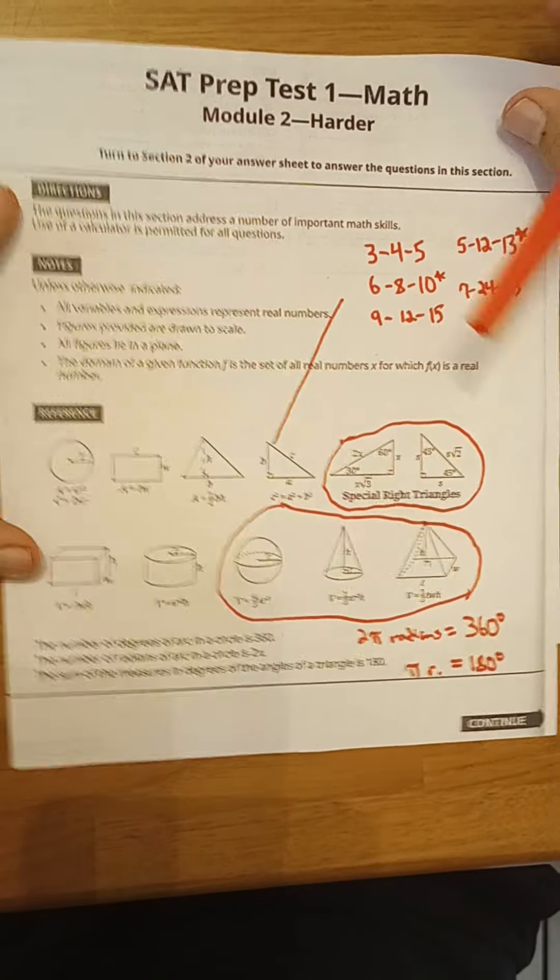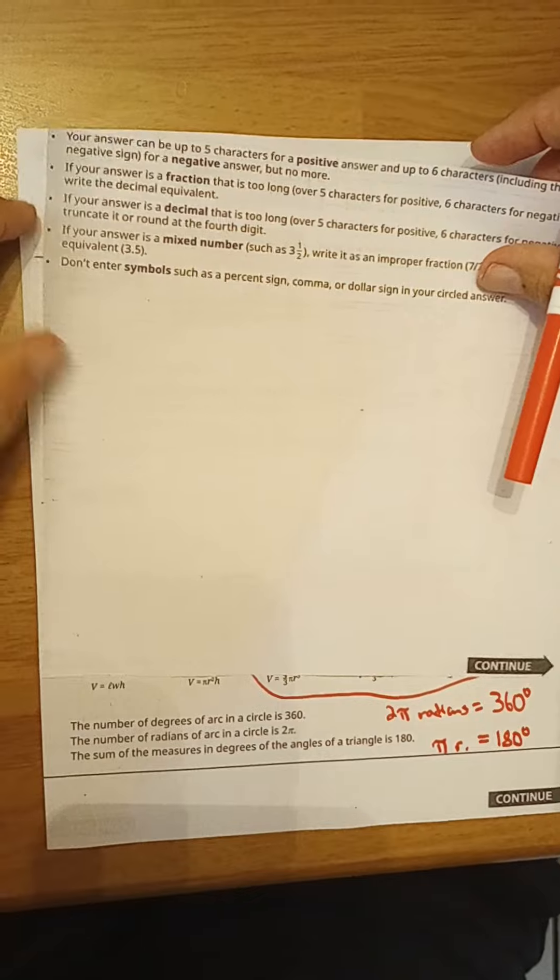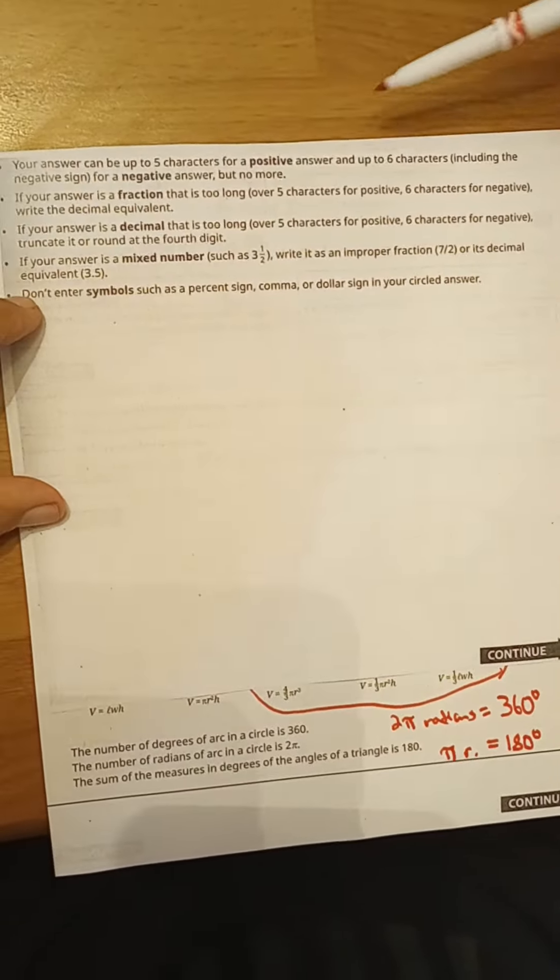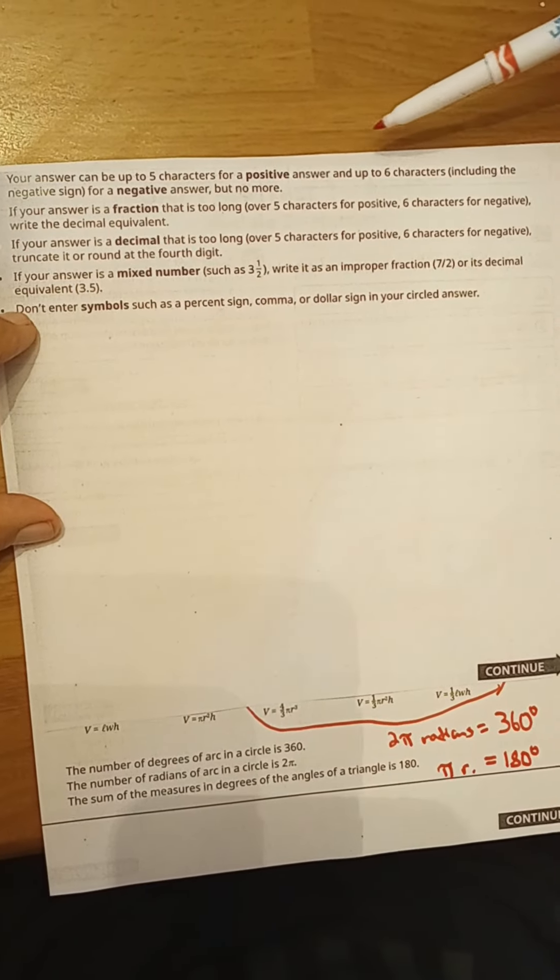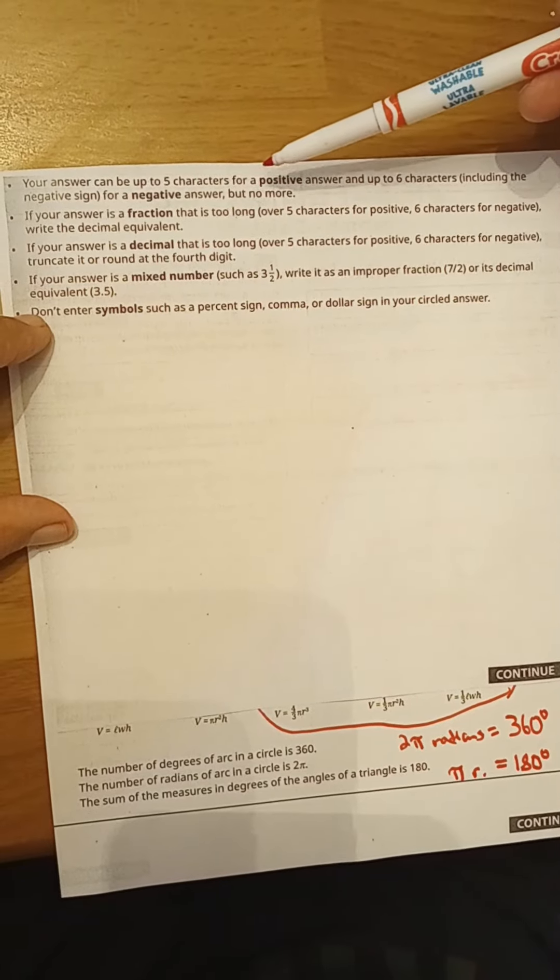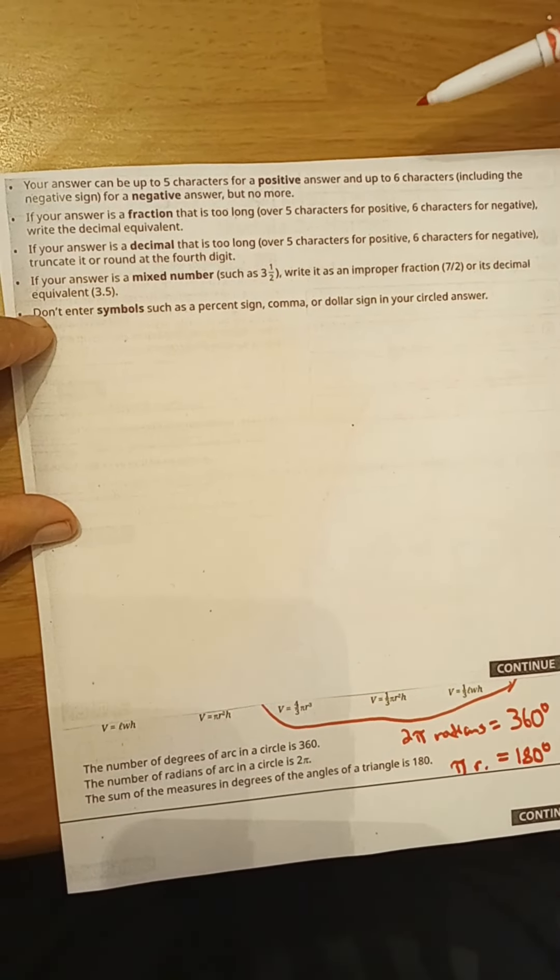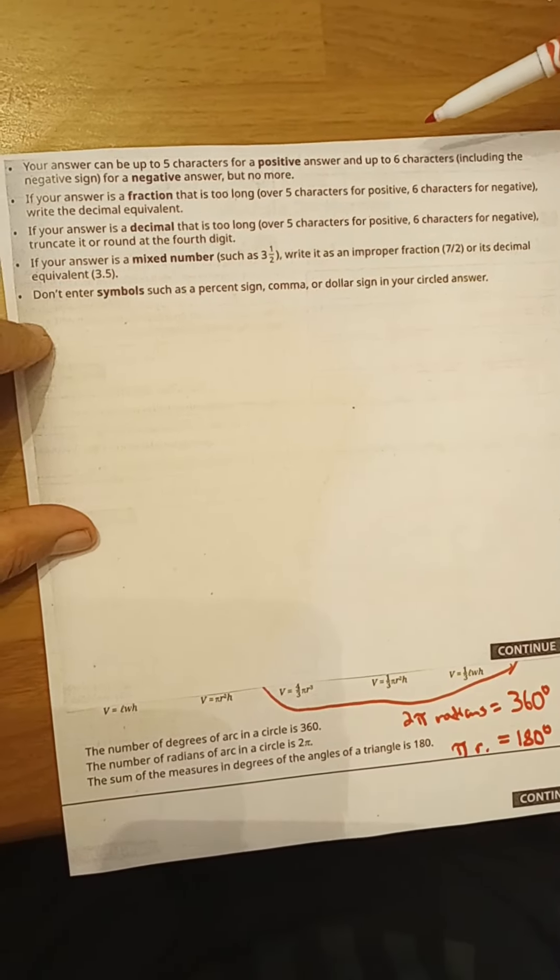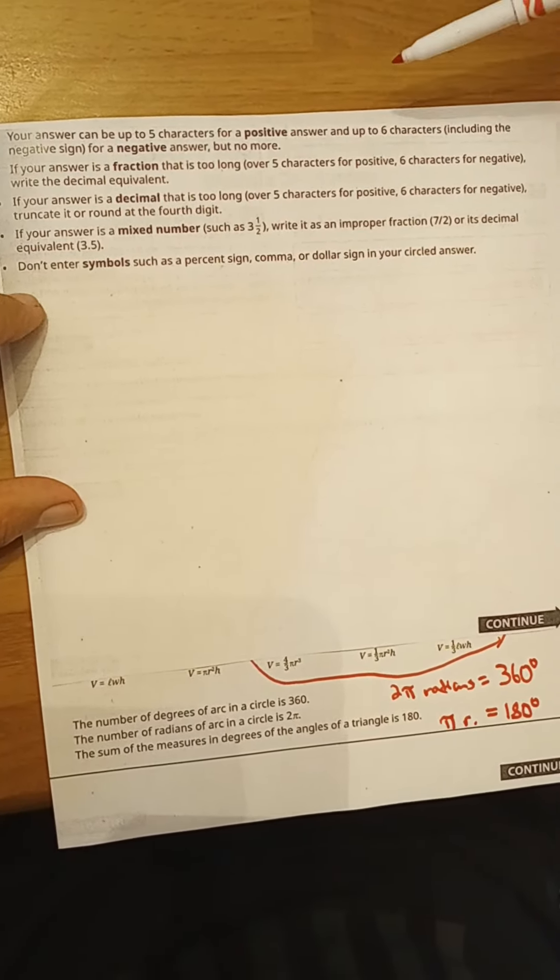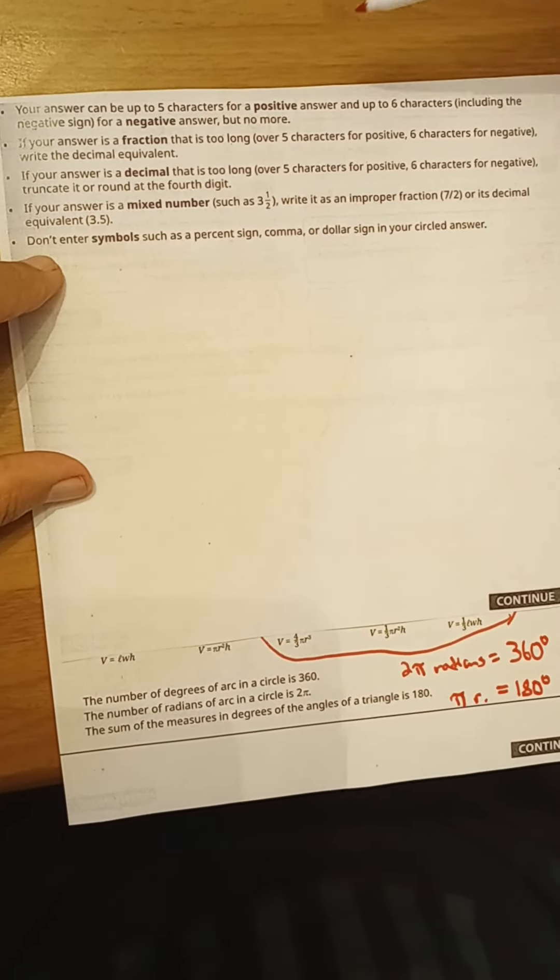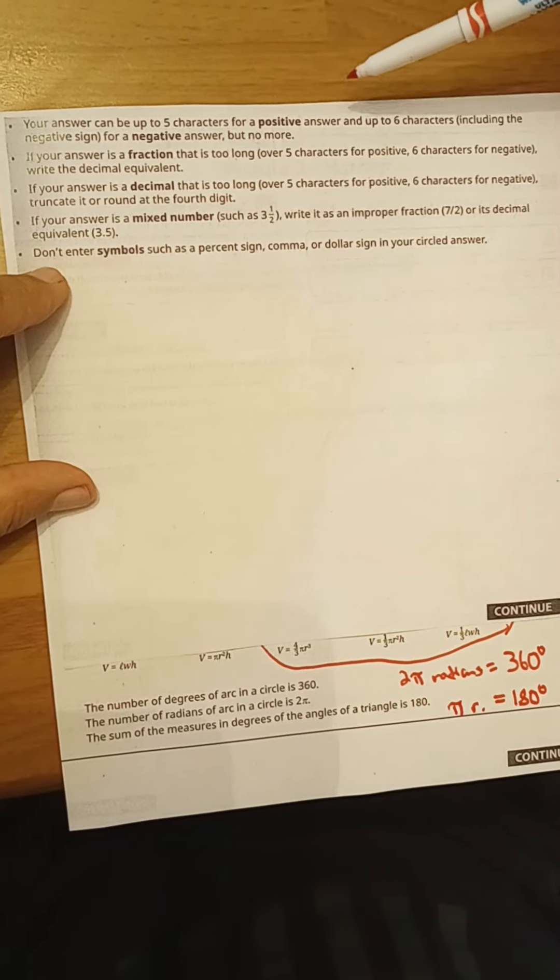Now, some new things that we want to look at here for the digital test. Your answer can be up to five characters for a positive number and up to six characters, including the negative sign, for a negative answer, but no more. That's new on the paper-based SAT. You cannot enter in a grid a negative answer, but on the digital SAT you can. That is new, and you won't have a grid. You just enter these in a box.